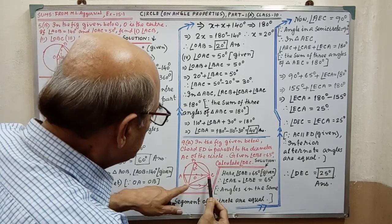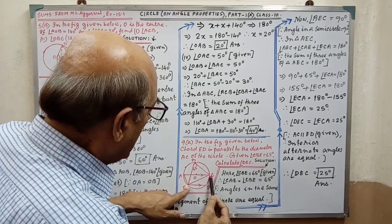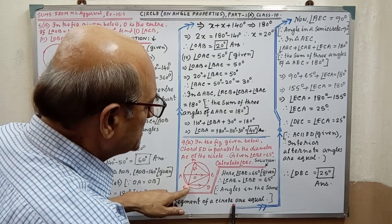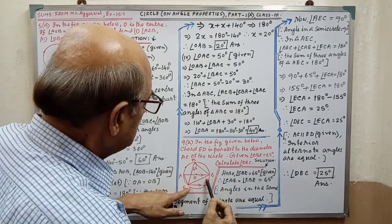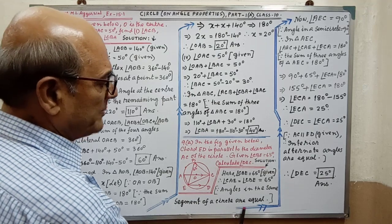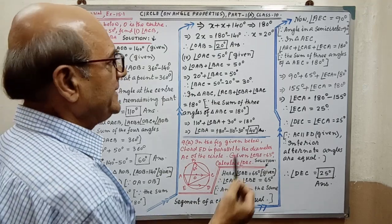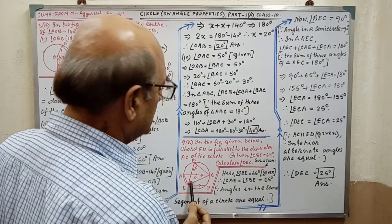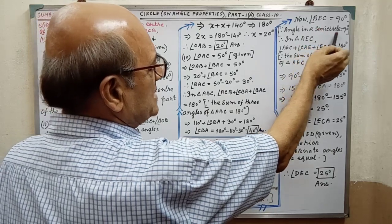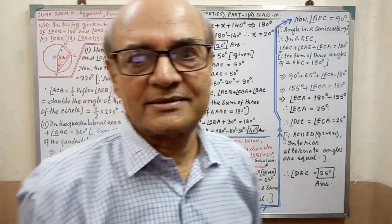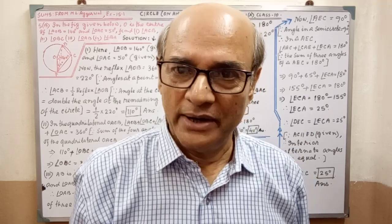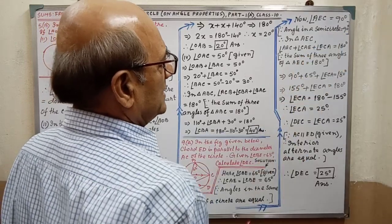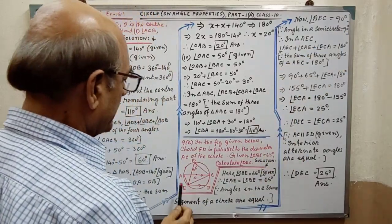That means angle CBE and angle CAE are formed on the same arc or same segment. Angles in the same segment of a circle are equal — so this is 65 and this also 65. Now angle AEC equal to 90 degree — this angle is 90 degree — while angle in a semicircle equal to 90 degree. This theorem you will get in video 1, you must go through that video.